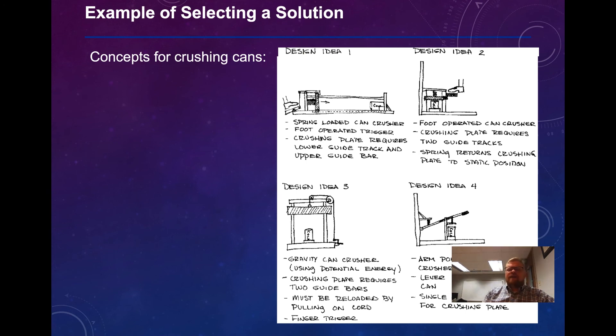I've got design idea number one, which is a spring-loaded can crusher. It has a foot-operated trigger. So imagine like a crossbow, you've got to pull this thing back, and then you hit a foot trigger, and it just launches off right on into the can. There's a crushing plate, which has a lower guide track and an upper guide bar to get the crushing plate to operate smoothly back and forth. Design idea two is a foot-operated can crusher. You put the can underneath a plate. The plate has two guide tracks, and there's a spring that returns the crushing plate to the static up position.